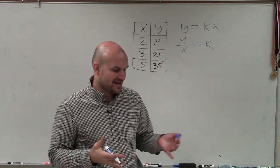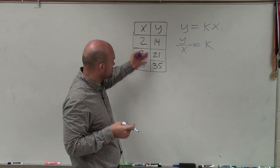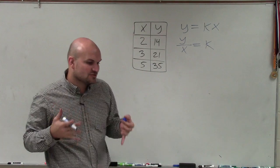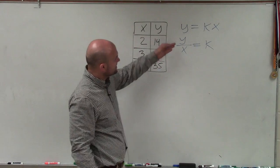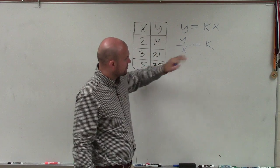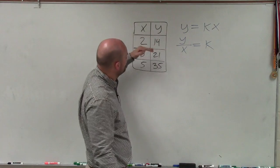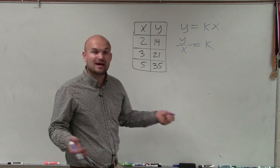To determine if this function in a table has y varying directly with x, we can simply take our y-coordinate over x-coordinate. As long as k is the same for each of our x and y coordinates, then we have direct variation.